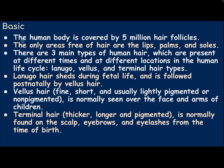Basics. The human body is covered by 5 million hair follicles. The only areas free of hair are the lips, palm, and sole. There are three main types of human hair which are present at different times and at different locations in the human life cycle: lanugo, vellus, and terminal hair types.